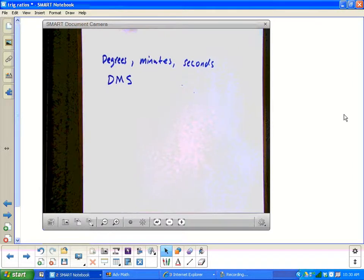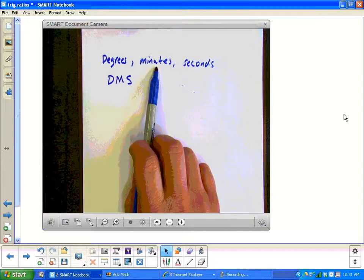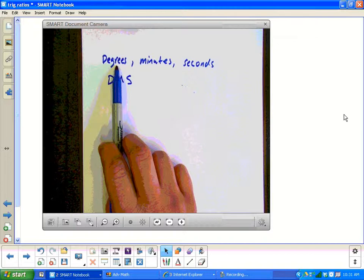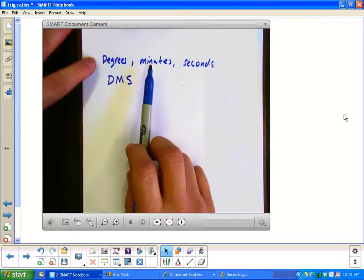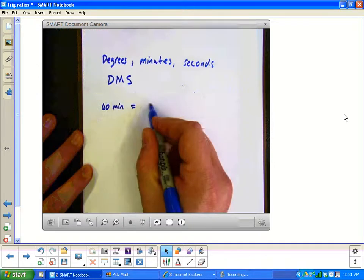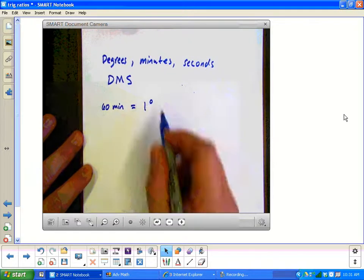Now ultimately, what I'm going to do is show you just really how to do this on the calculator. So all this is going to be is just a little calculator exercise. But I'm going to show you where it comes from. A minute is basically a part of a degree. What you have is that 60 minutes is equal to one degree.